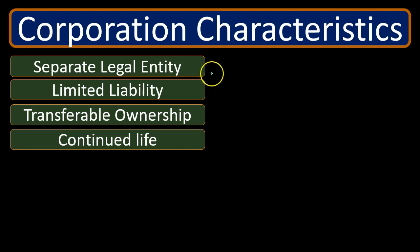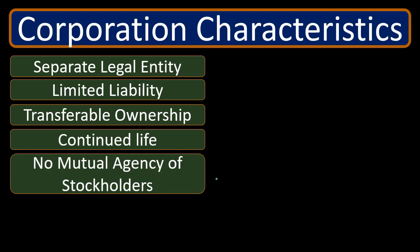Corporations also have continued life, again stemming from the separate legal entity concept. If you're a partnership or sole proprietor, you're not legally separate from your business — and if someone dies, quits, or a partner leaves, that basically ends the partnership and it needs to be reformed. For a corporation, that's not the case. If any person in the corporation dies, whether the CEO or the founder, the corporation lives on because it has been given certain characteristics, including the ability to claim assets, that continue beyond any single individual.